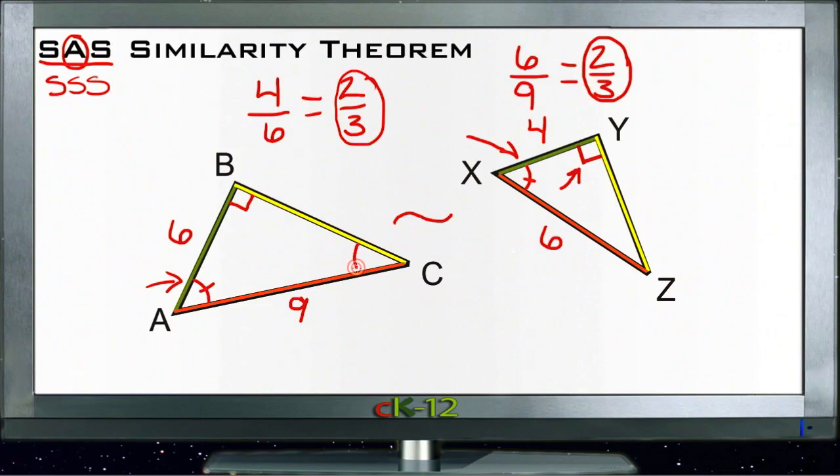And whatever angle C is on both triangles, it's also congruent. So we can mark it with two hash marks. We also know that whatever this side over here is on the smaller triangle, we can call it, say, Y.